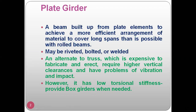Plate girders are also a beam, so the difference between plate girders and beams is only in depth. They are built up from plate elements to achieve a more efficient arrangement of material to cover long spans — something not possible with rolled beams. Beams usually use hot-rolled steel sections, but a girder is a beam that we build ourselves with the help of plate elements, making it a built-up member.